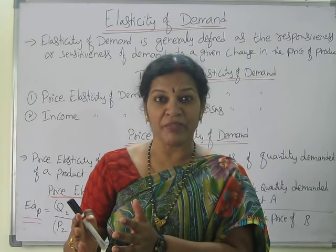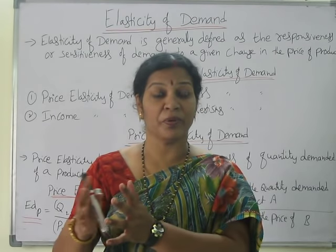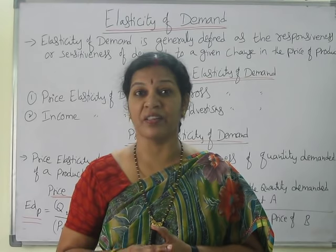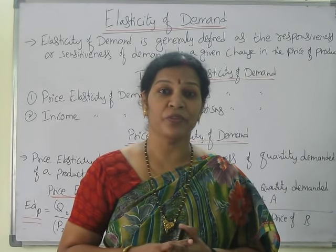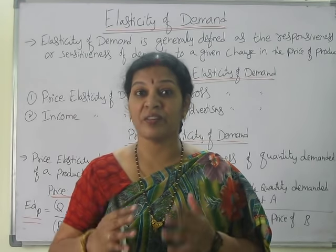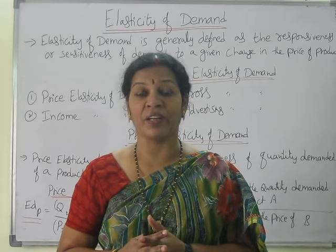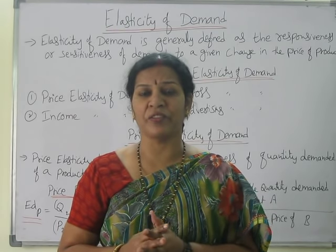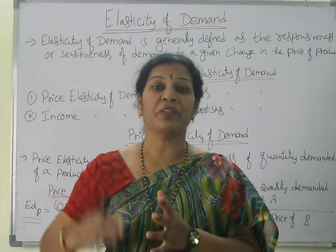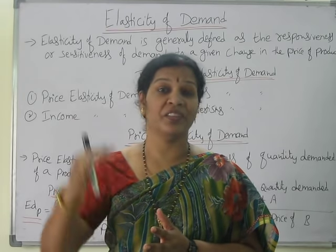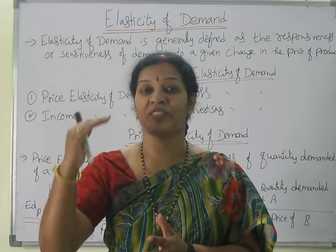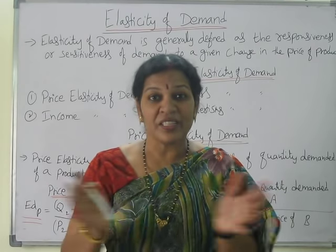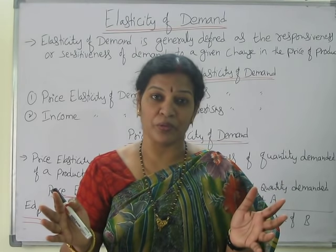Product B will make a lot of difference. What is product B? You can take electronic items like cell phones, TV, refrigerator, vehicles — two-wheeler, four-wheeler, or ACs. All these things make a difference because of price increase or decrease. If price is increasing, people will buy less; if decreasing, they will buy more.